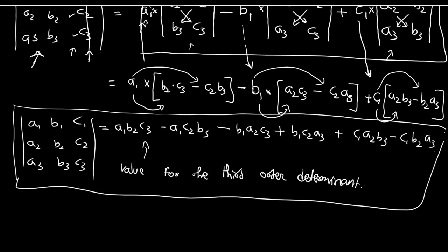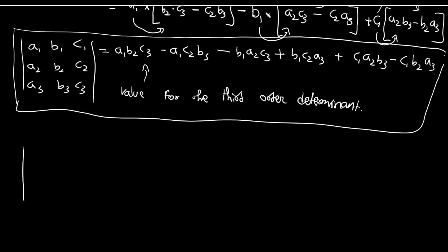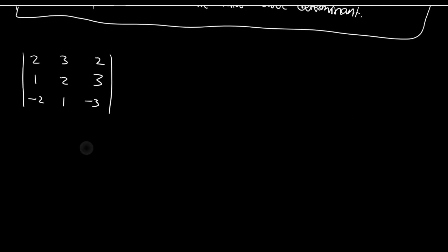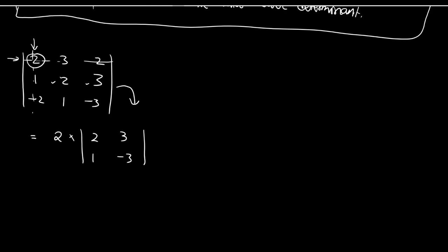Let us solve an example based on the third order determinant. We will solve: 2, 3, 2 / 1, 2, 3 / −2, 1, −3. Using our method, we first consider the first element of the first row, which is 2, and multiply it with the second order determinant found by excluding the first row and first column: 2, 3, 1, −3.